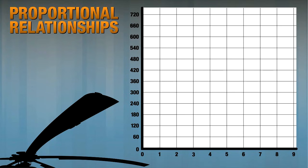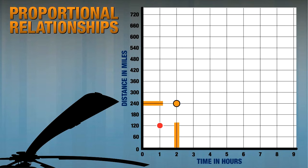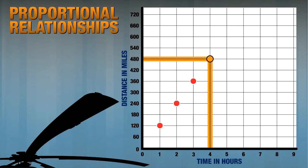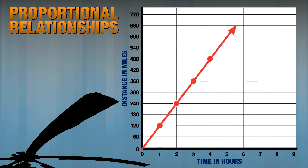Another way to visualize this is by plotting points on a graph. The vertical, or y-axis, represents distance in miles, and the horizontal, or x-axis, represents time in hours. Let's plot our points: in one hour, 120 miles; in two hours, 240 miles; in three hours, 360 miles; and in four hours, 480 miles. These points form a straight line that could be extended.